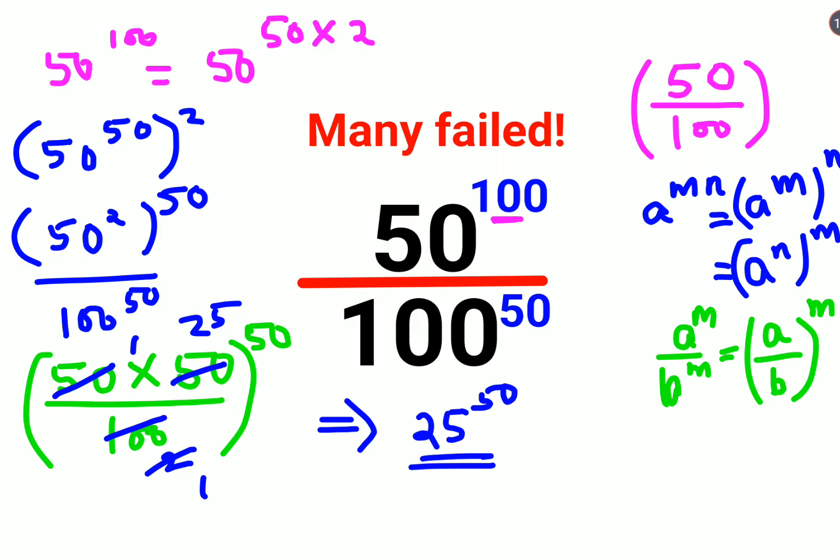You can even write this as 5 square the whole raised to 50. Instead of 25 I can write this as 5 square the whole raised to 50 which can eventually be written as 5 raised to 2 into 50 which becomes 100. I have applied this law.